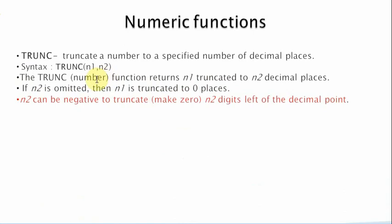The TRUNC function is used to truncate a number to a specified number of decimal places. The syntax is TRUNC(n1, n2) — it accepts two parameters. This function returns n1 truncated to n2 decimal places. If n2 is omitted, n1 is truncated to zero places. The n2 value can be negative, and if the value is negative, it truncates or zeroes out digits to the left of the decimal point.